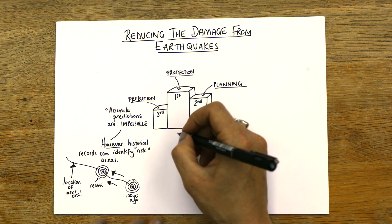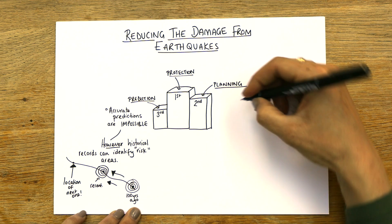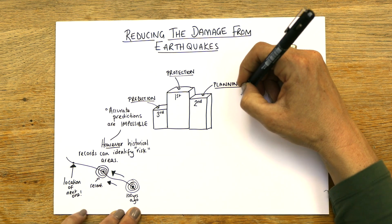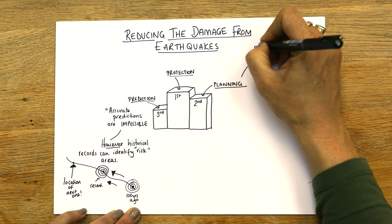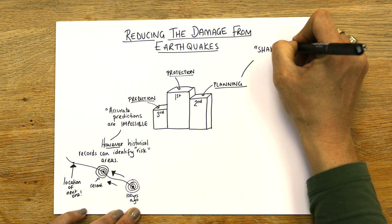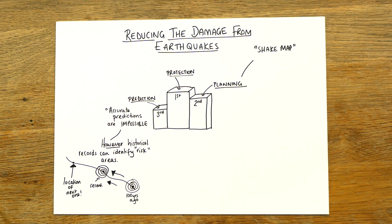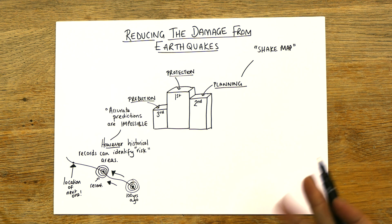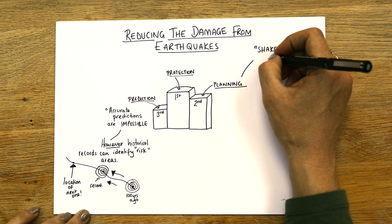Let's do planning — planning's really important. For planning, you can have something called a shake map. It's normally colour-coded and it's a bit like looking at past quakes. It will tell you which areas are more likely to shake worse than other areas, and then they can think about where to put certain buildings.